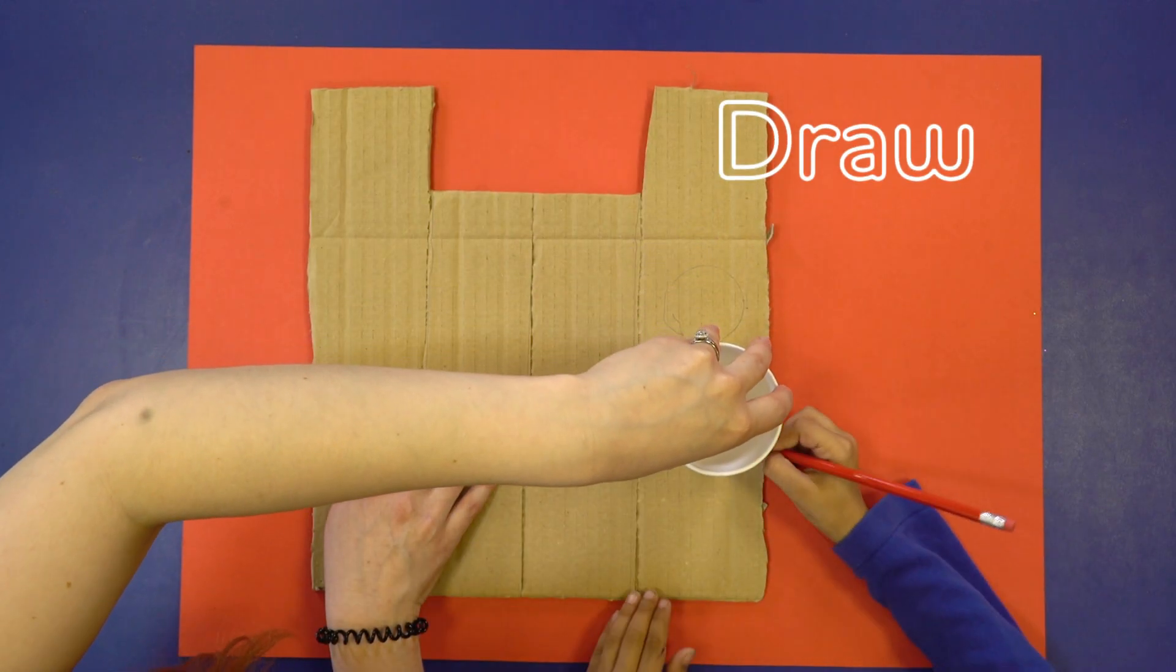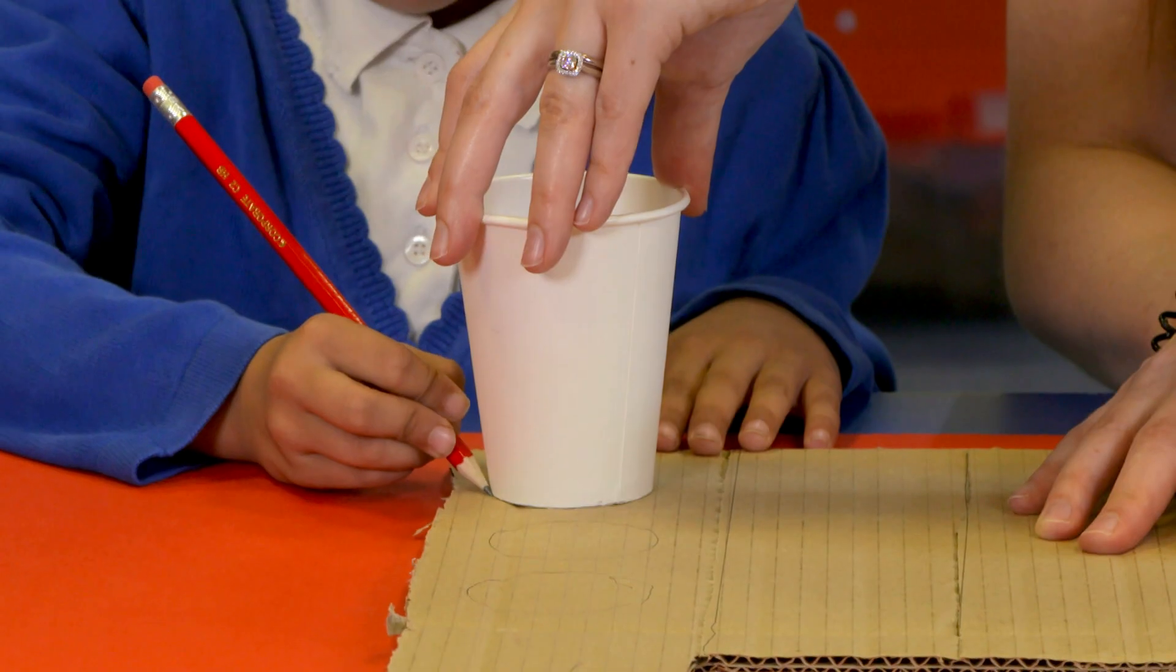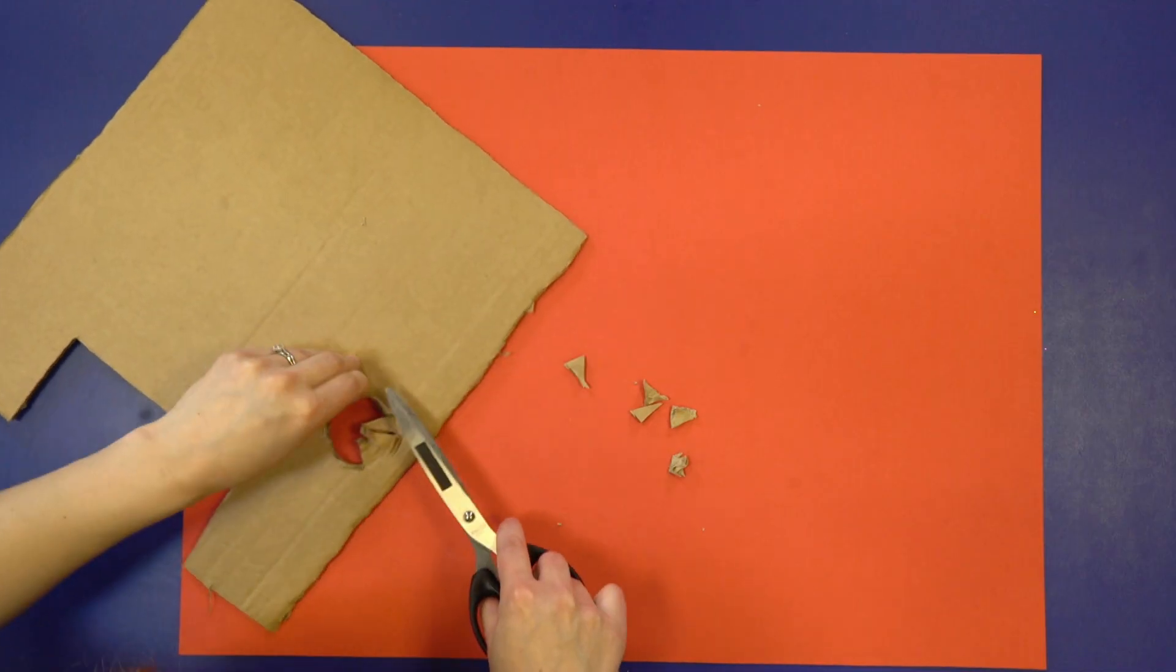Draw around a cup to make three circles in the last column. Ask a grown-up to cut out the three circles.